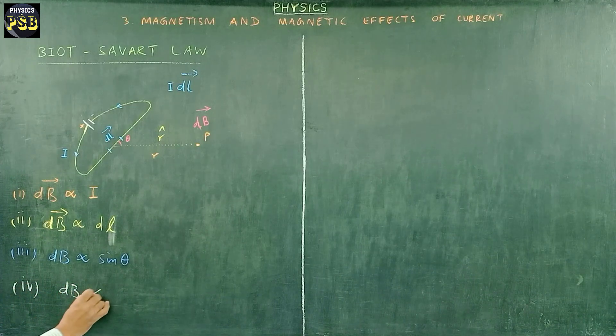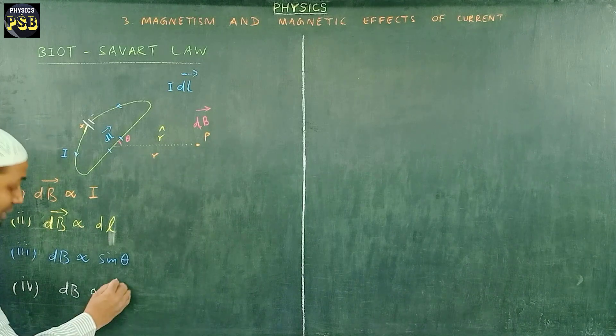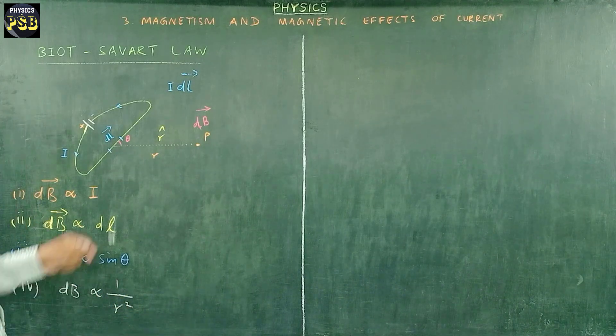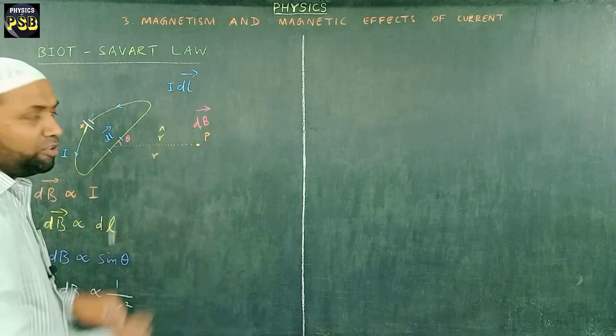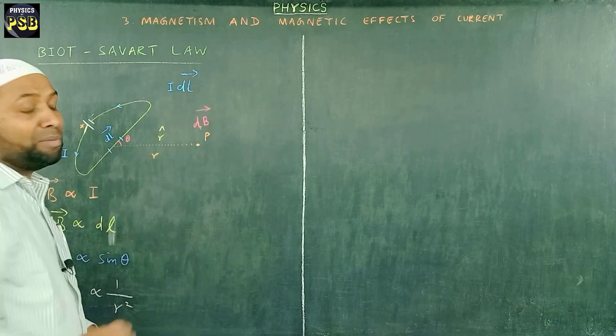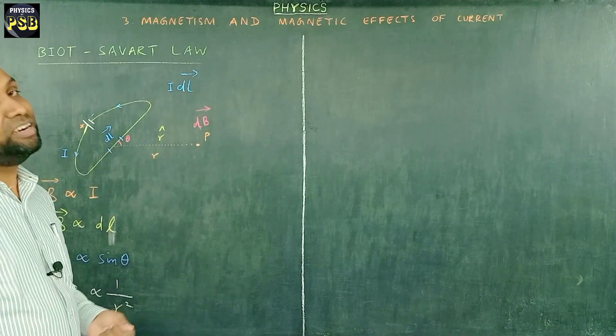dB is found to be inversely proportional to square of distance between current element and the point P where we find the magnetic field.